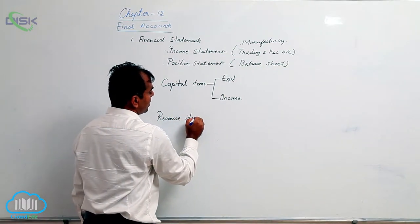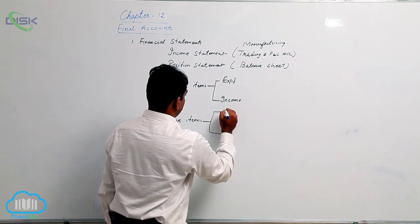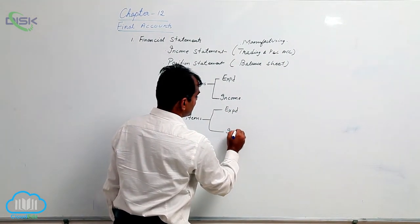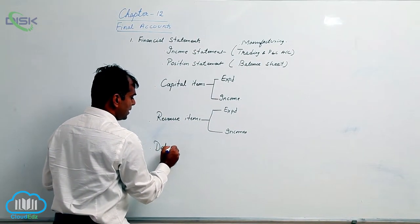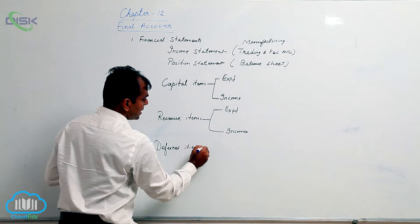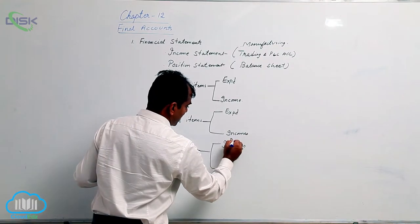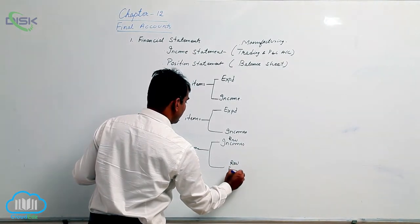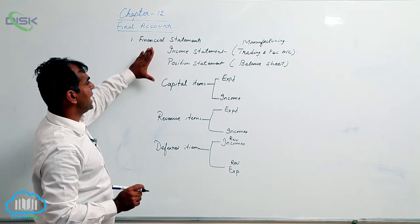Under revenue items, we have revenue expenditure and revenue incomes. We also had deferred items, which include deferred revenue incomes and deferred revenue expenditure. These are the concepts we have discussed previously, and now we will discuss how they relate to the income statement and position statement.